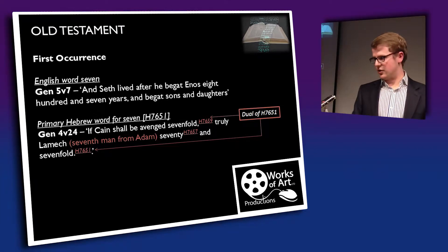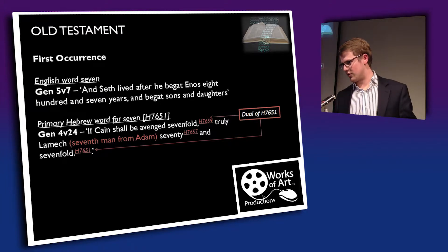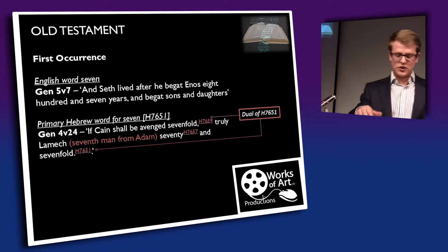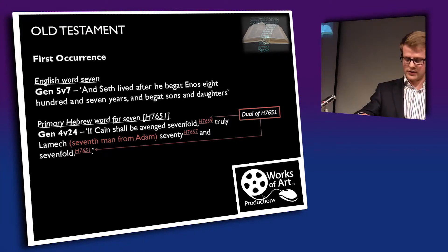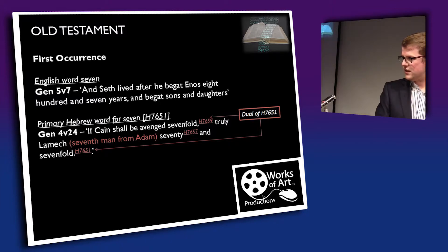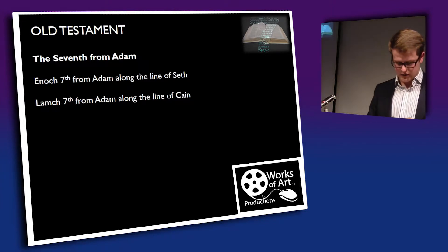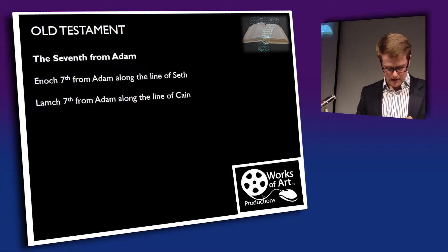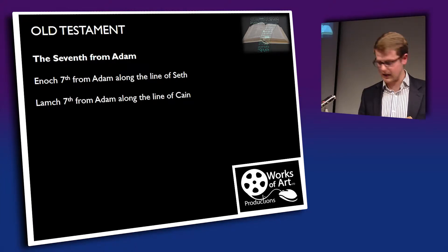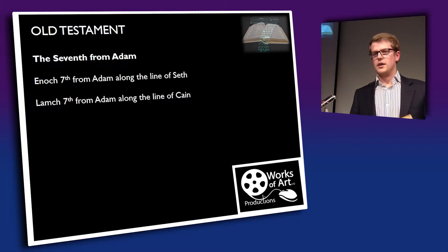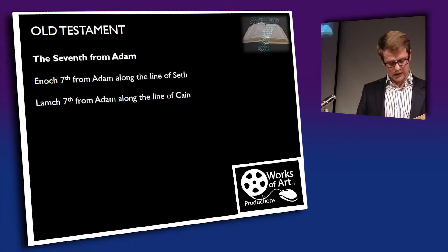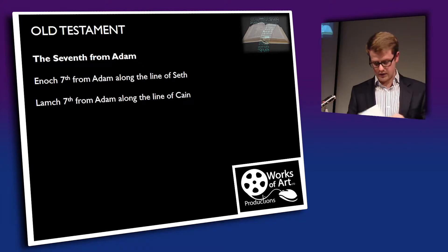That is the first occurrence in the Hebrew of the primary word seven, but there is more we can glean from the story of Lamech. Turn to Jude, verse 14: 'And Enoch also, the seventh from Adam, prophesied of these things, saying, Behold, the Lord cometh with ten thousands of his saints.' Scripture chooses by inspiration to tell us that Enoch was the seventh from Adam.